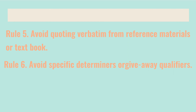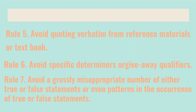Rule number six: avoid specific determiners or giveaway qualifiers. Students quickly learn that strongly worded statements using 'never,' 'all,' or 'always' are more likely to be false than true, while moderately worded statements using 'many,' 'often,' 'sometimes,' 'generally,' 'frequently,' or 'some' are more likely to be true. Such qualifiers should be avoided. Rule number seven: avoid a grossly disproportionate number of either true or false statements, or patterns in the occurrence of true or false statements.